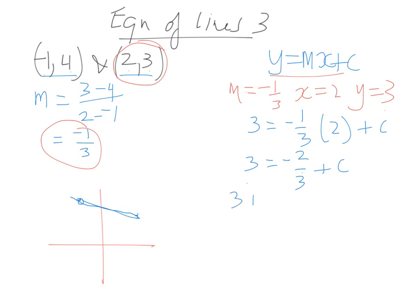So 3 plus 2 over 3 equals c. I'm going to convert this to a fraction over 3. So 9 over 3 plus 2 over 3 equals c. We can imply now that c equals 11 over 3.